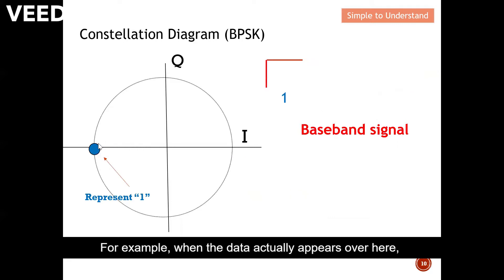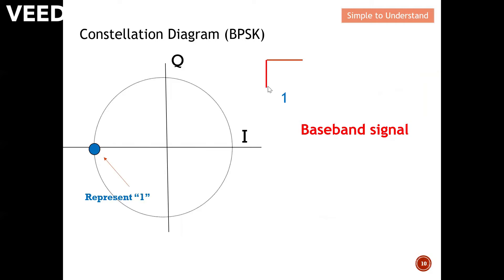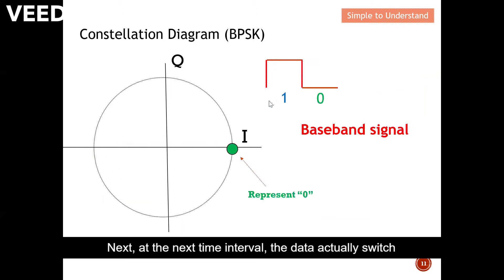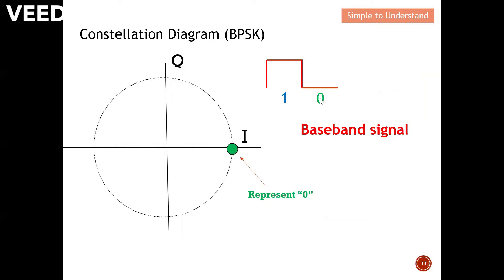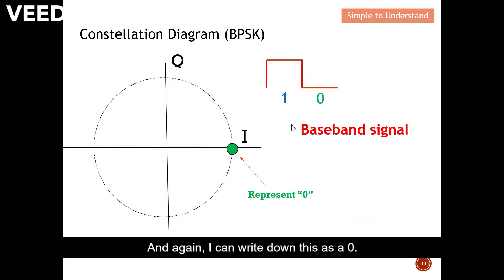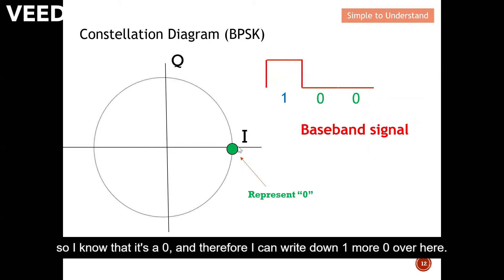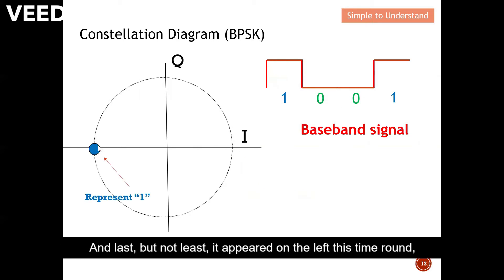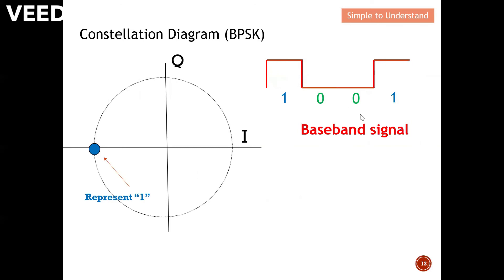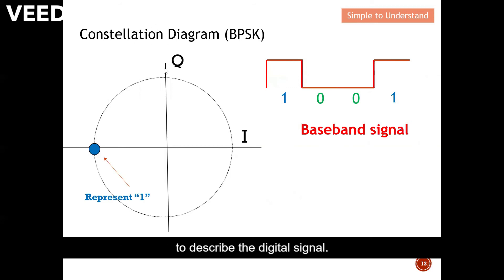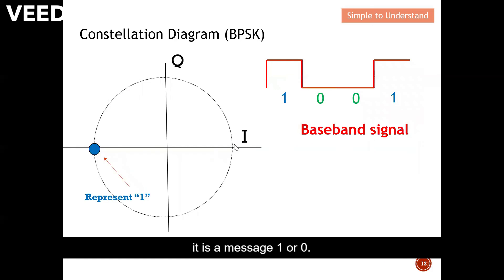Let me give you an example with a baseband signal of 1001. When the data appears on the left, you know it's a digital one. At the next time interval it switches to the green location, so that's a zero. The signal remains there, so I write down another zero. Finally it appears on the left again, indicating a one — giving us 1001. This is how we use the constellation diagram to describe a digital signal. It's much easier to identify ones and zeros this way. Please like and subscribe, thank you.